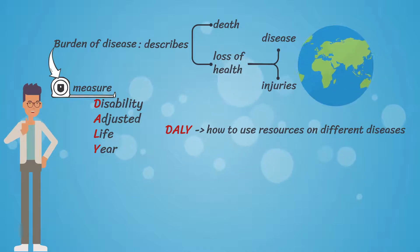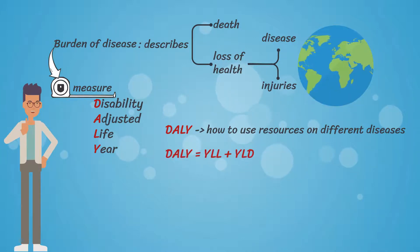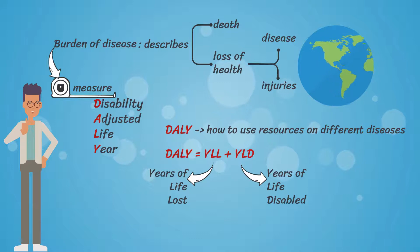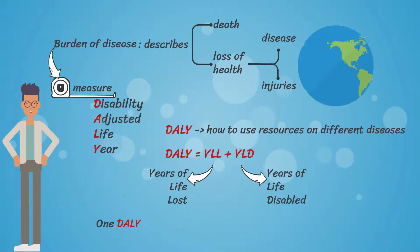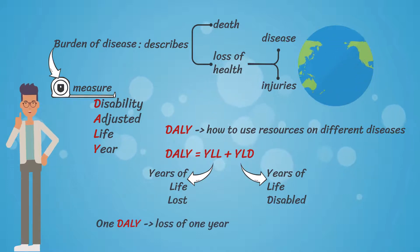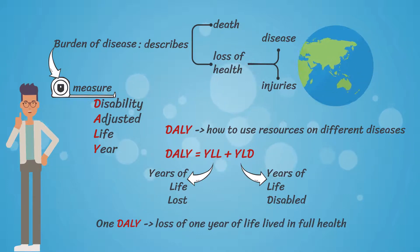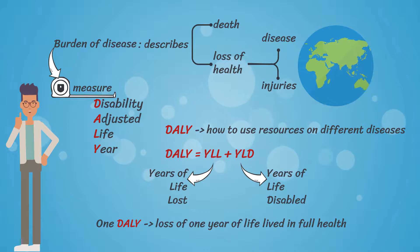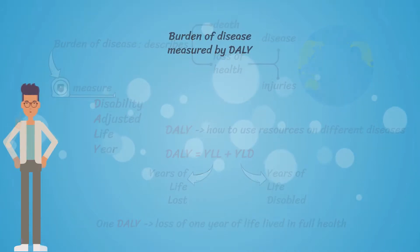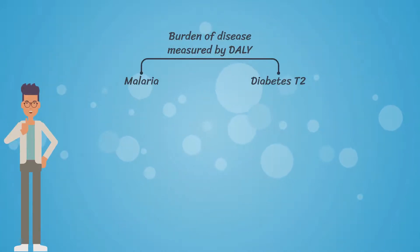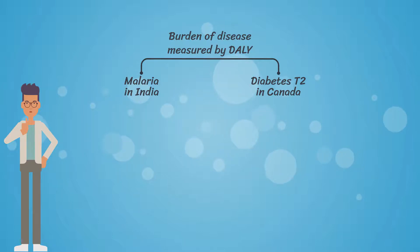DALY can be measured by adding years of life lost to years of life disabled, and one DALY is equal to loss of one year of life which could be lived in full health. We can measure DALY for different diseases in different regions of the world to understand their burden.